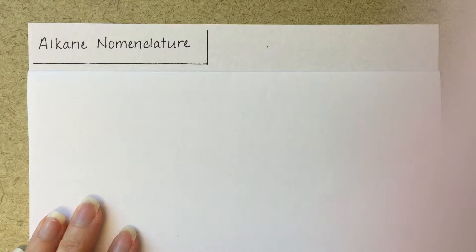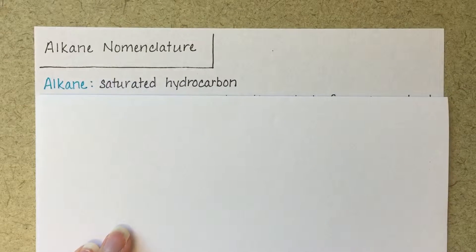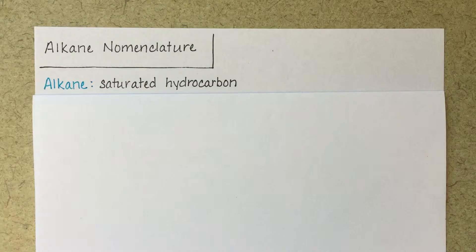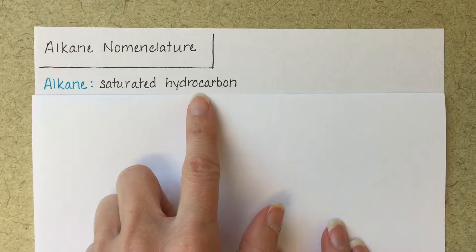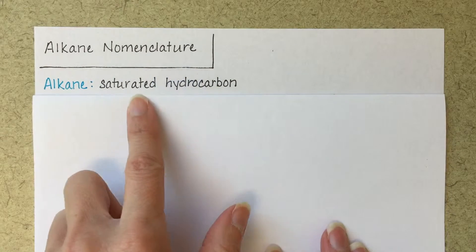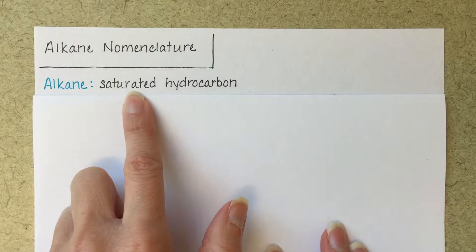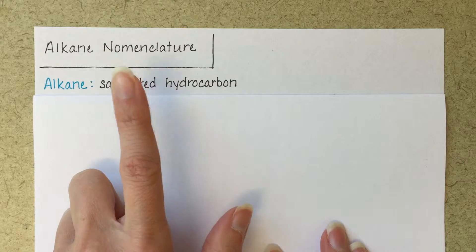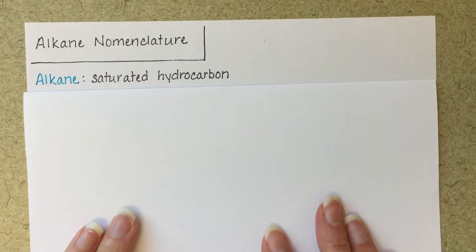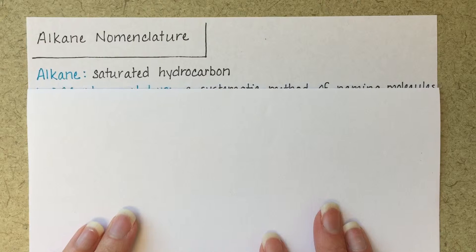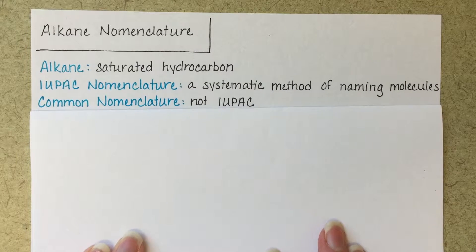In this video, you are going to learn how to name alkane molecules. Alkanes are saturated hydrocarbons, which is just a fancy way of saying molecules that consist of hydrogen and carbon and have only carbon-carbon single bonds. So there's no carbon-carbon double bonds or carbon-carbon triple bonds in these molecules, and that makes them pretty easy to name.